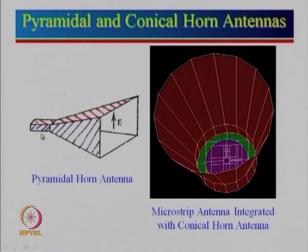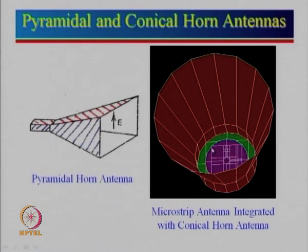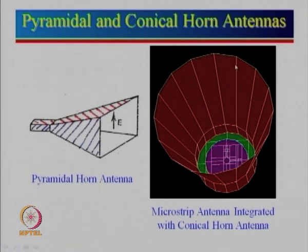While investigating the coaxial feed, the idea came up: why not use a coaxial feed to excite a microstrip antenna? We used a conical horn antenna with a microstrip antenna at its base. This is very simple to design for different polarizations — horizontal, vertical, circular — or for multiband operation. We use the advantages of both the microstrip antenna and the horn antenna. We gave it the name: microstrip antenna integrated with conical horn antenna, and we will look into the details of this in time to come.